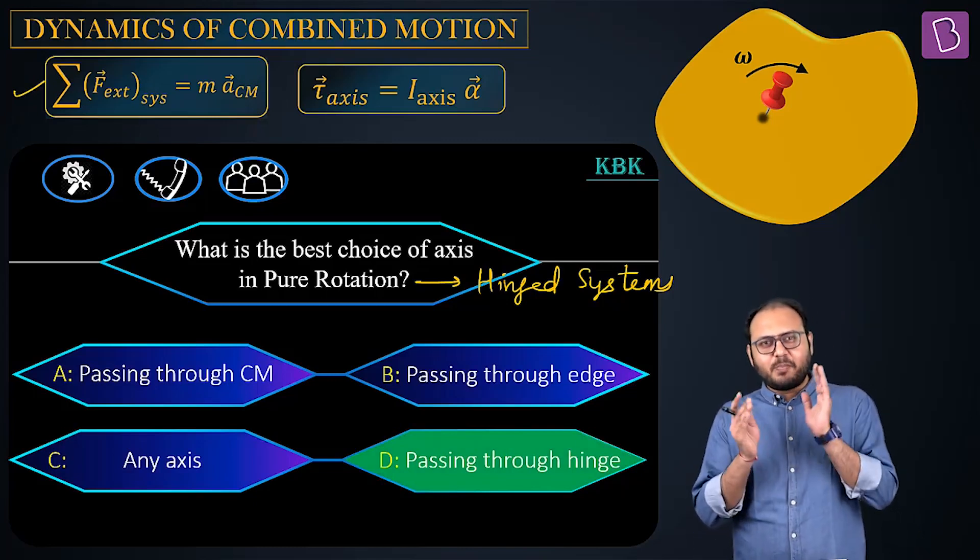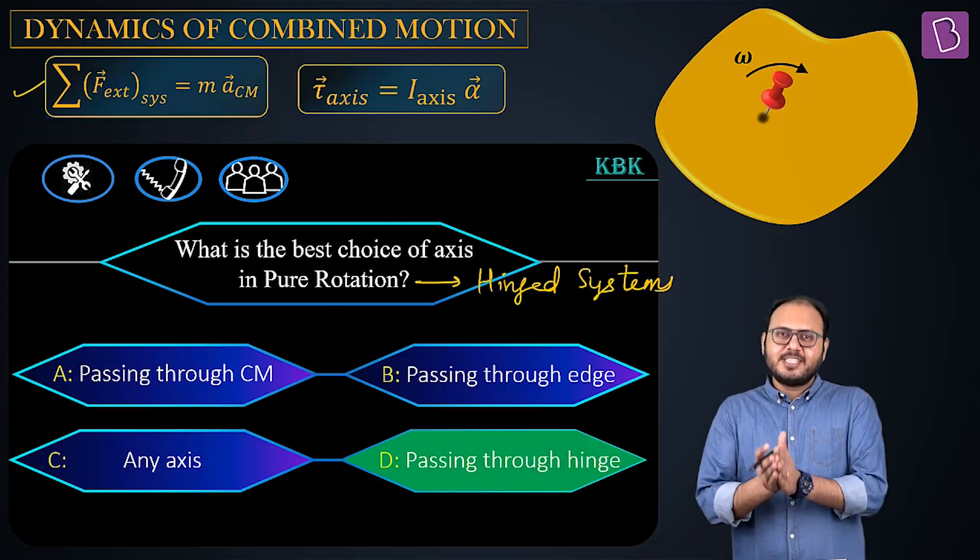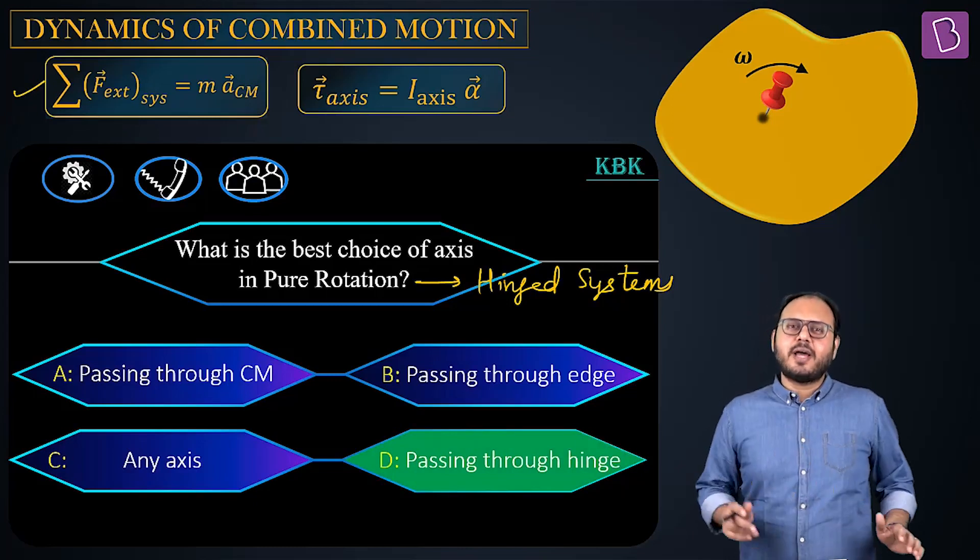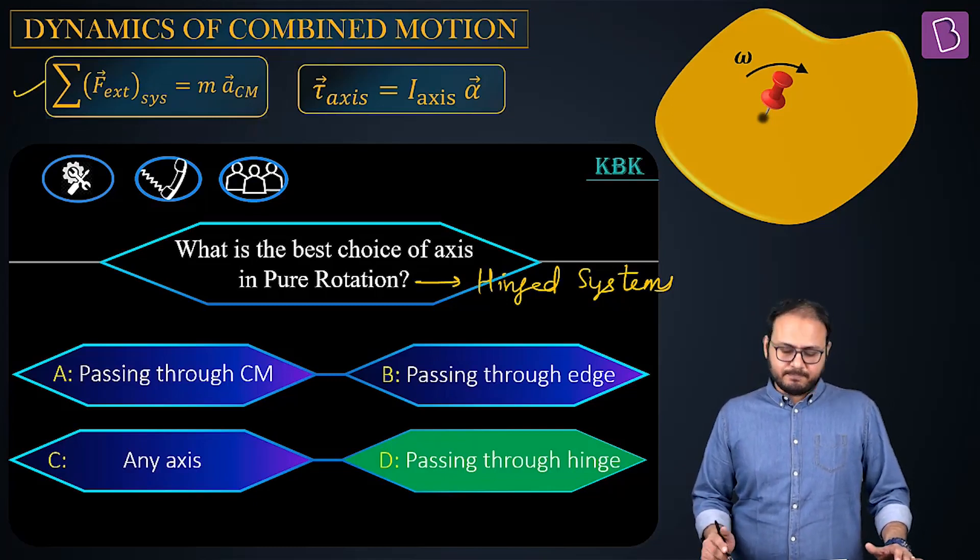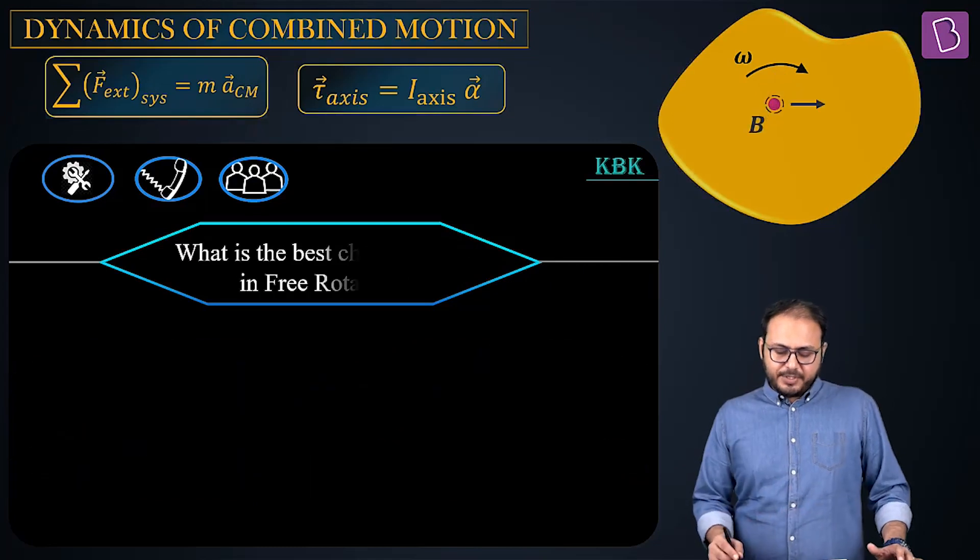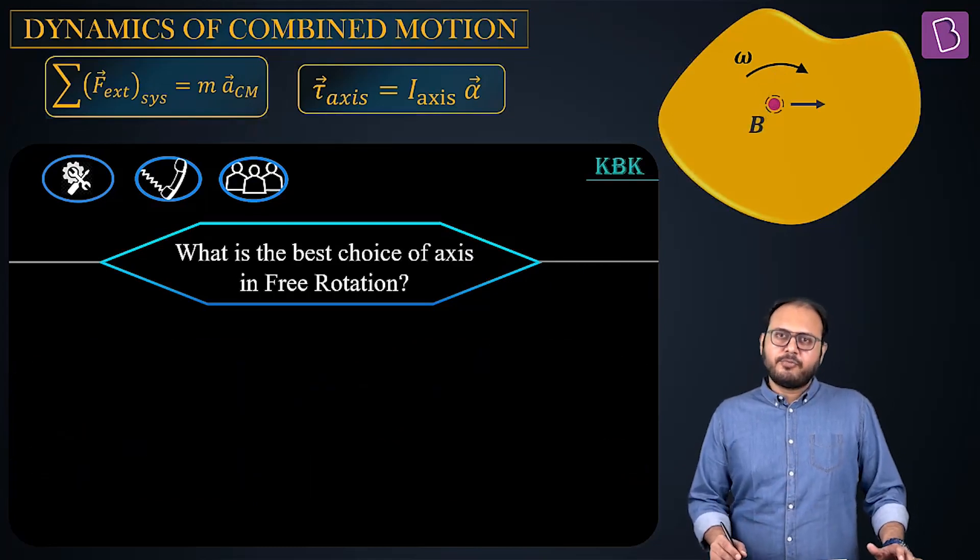The best choice for pure rotation motion is apply torque equal to I-alpha about hinge. Primed up. Ready. Format is clear. If the format is clear, let me change the question: For free rotation.